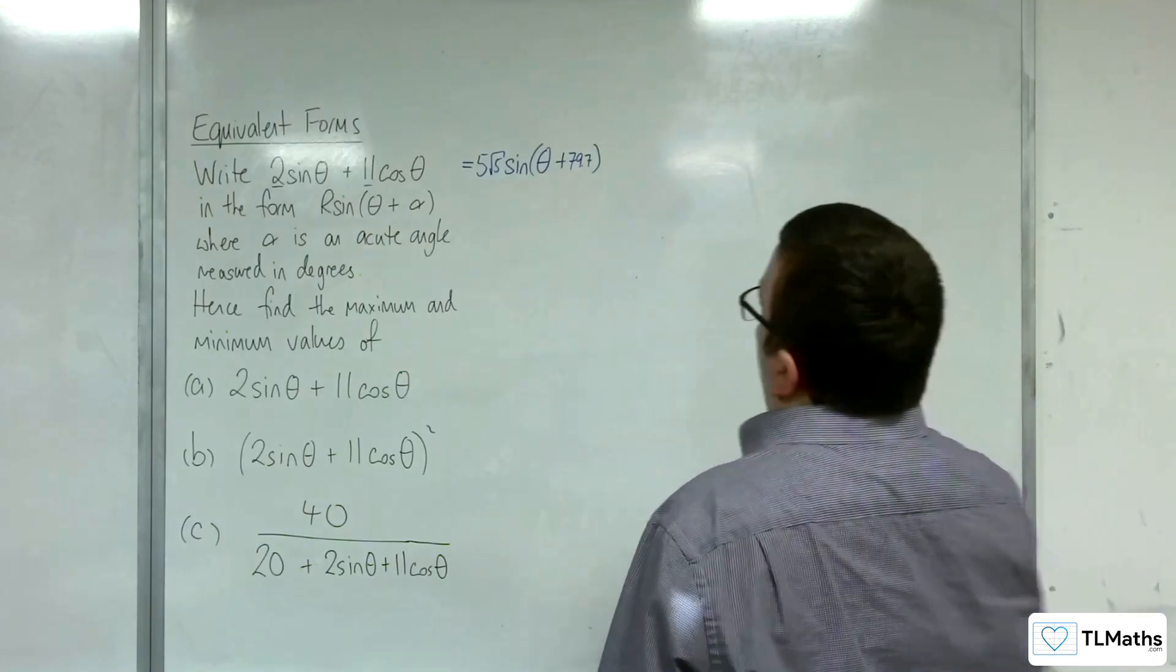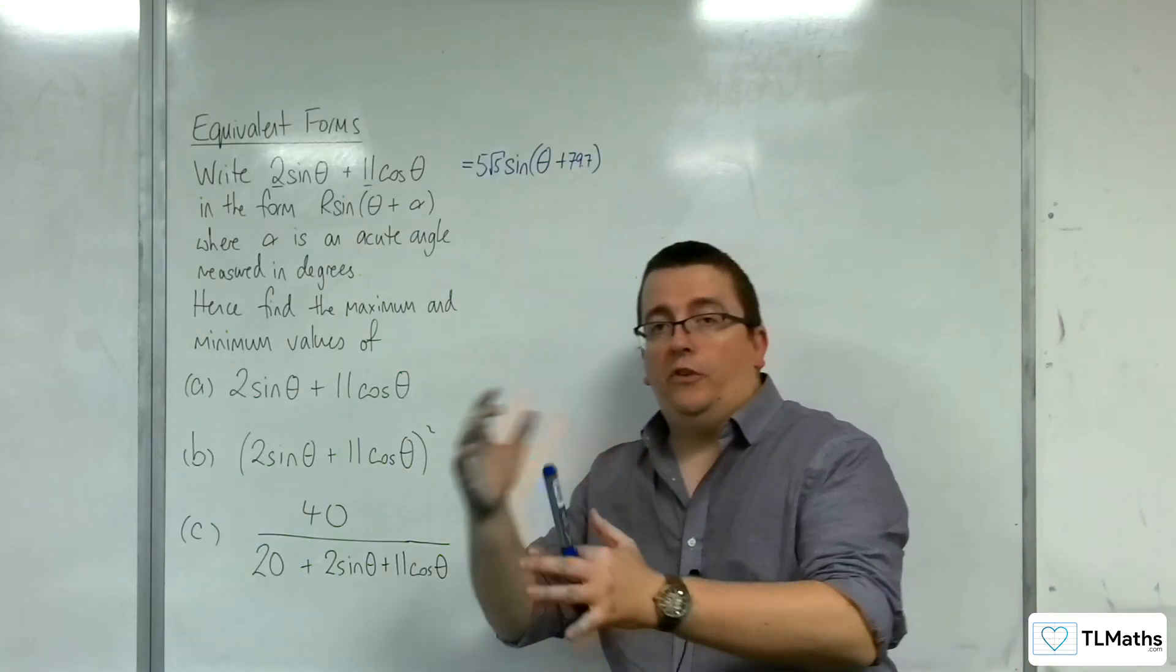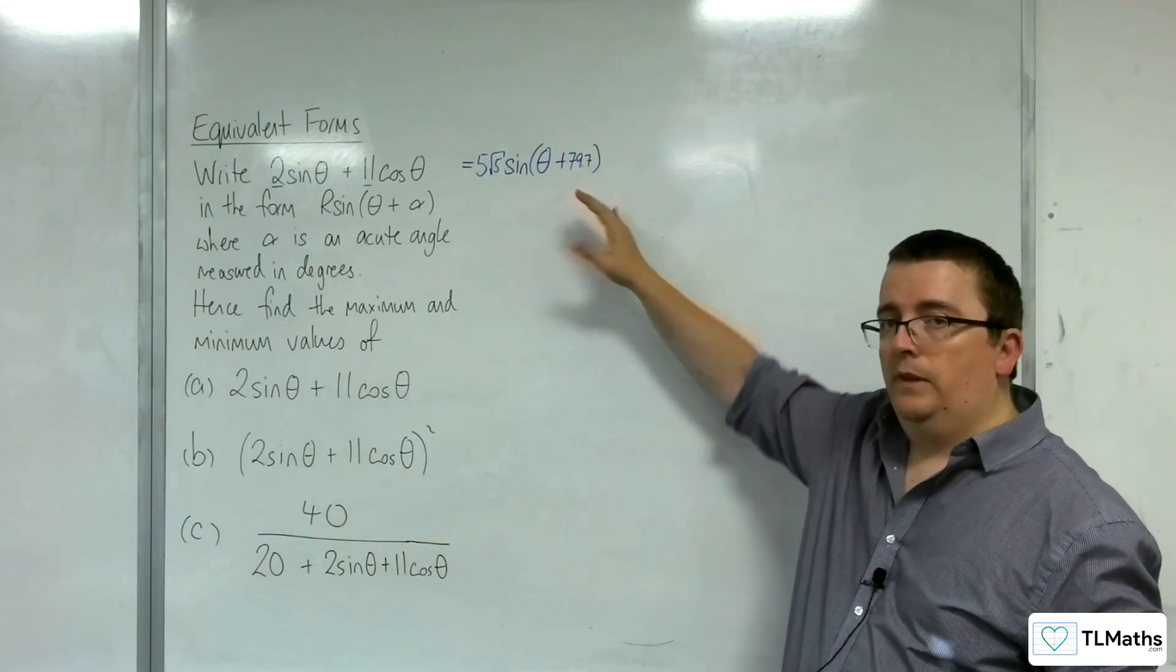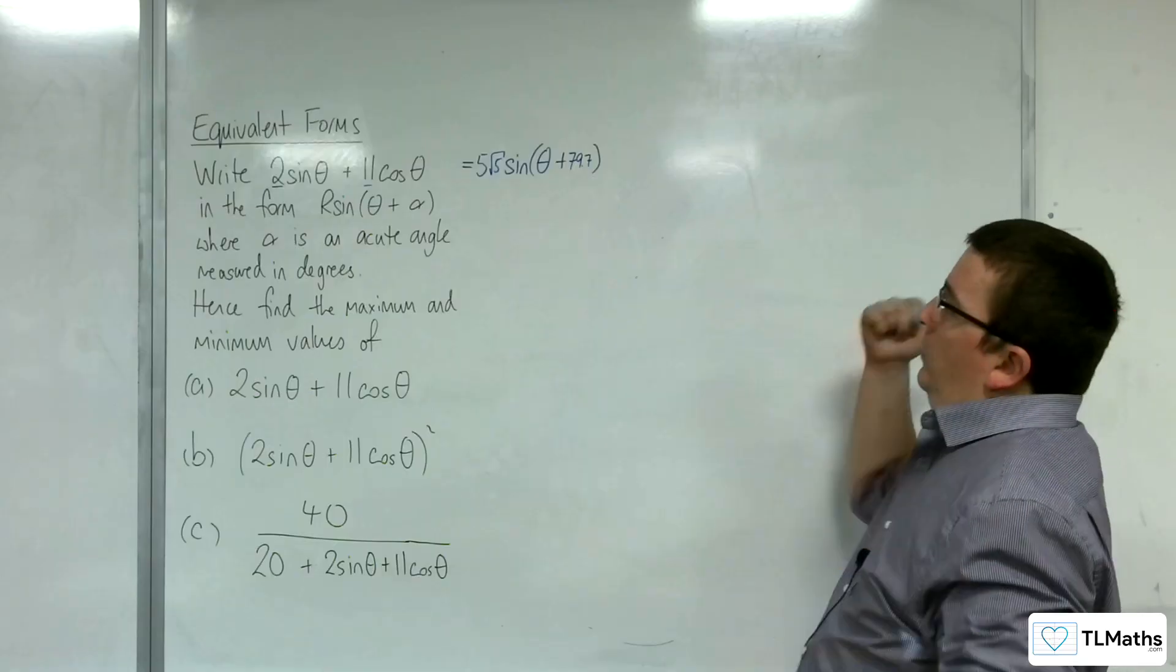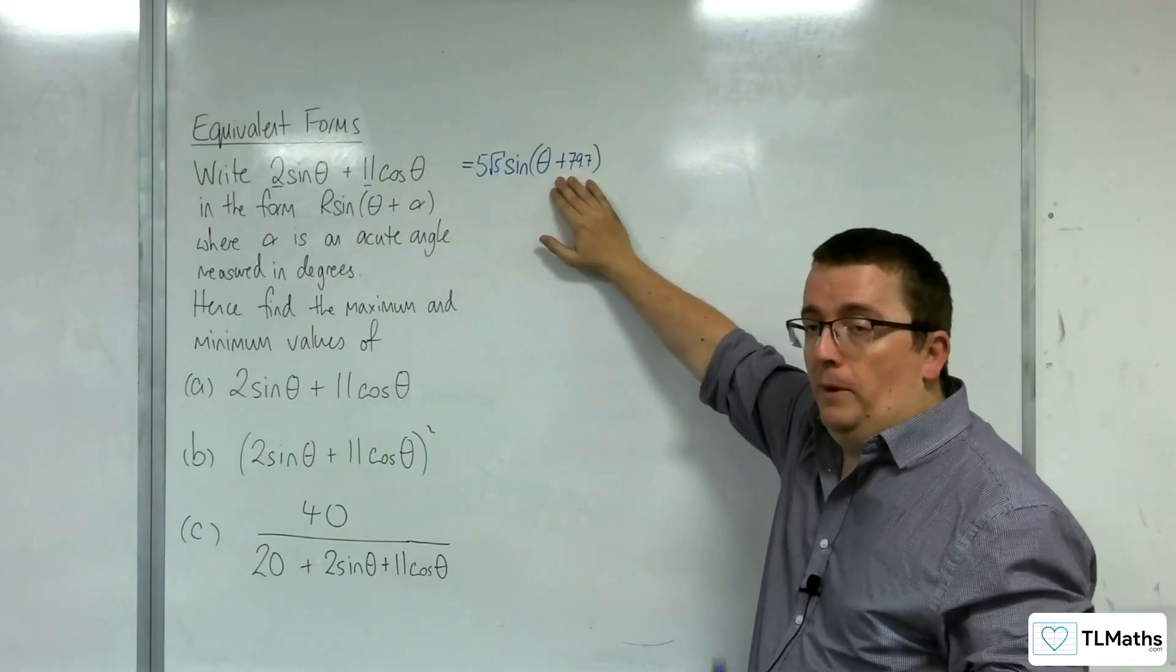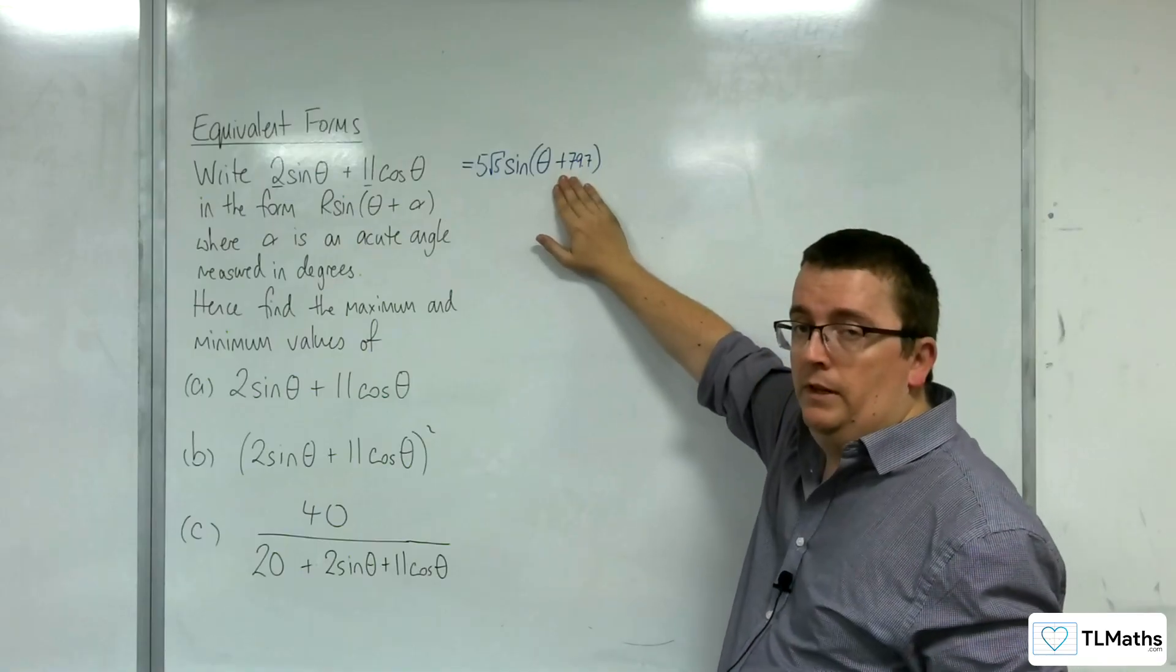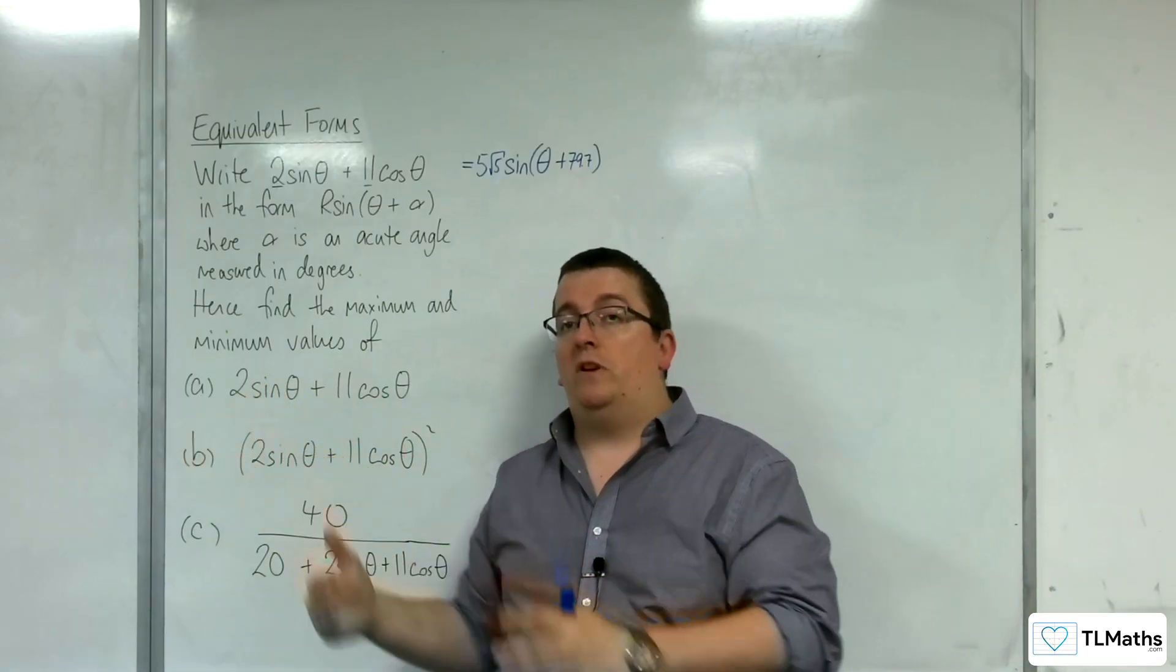Now, what we need to identify from this and understand is how the curve of sine theta is transformed to this. Now, two transformations are going on. One transformation is a translation by the vector minus 79.7. And so the curve is being shifted 79.7 degrees to the left.